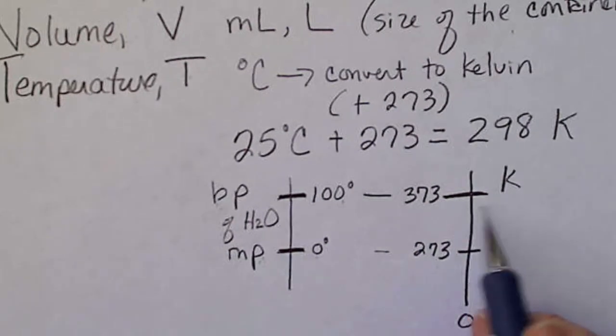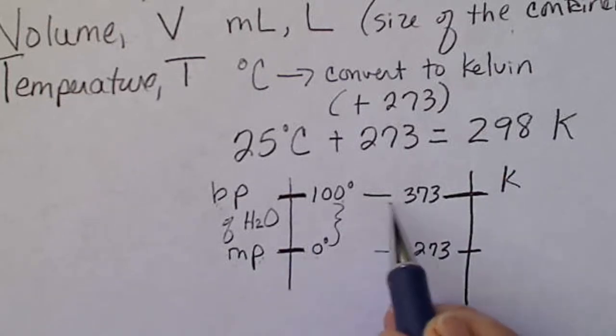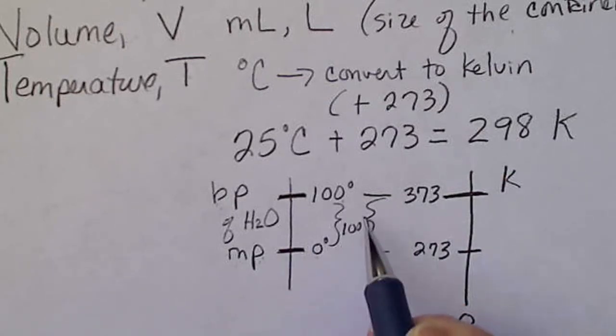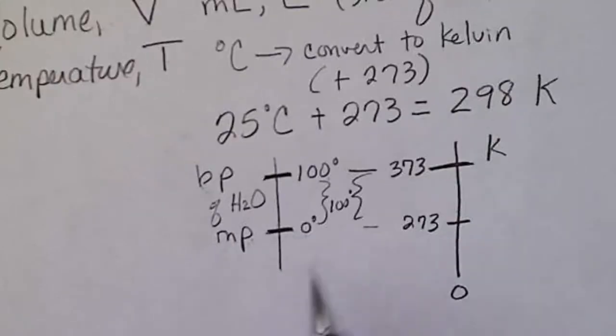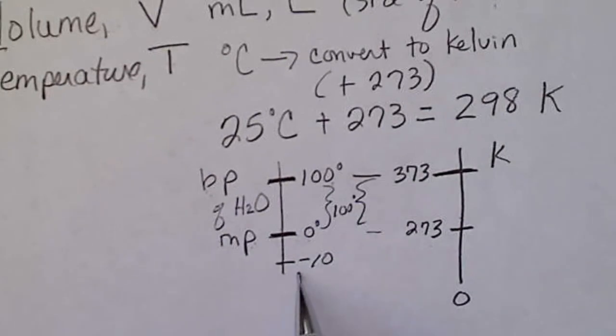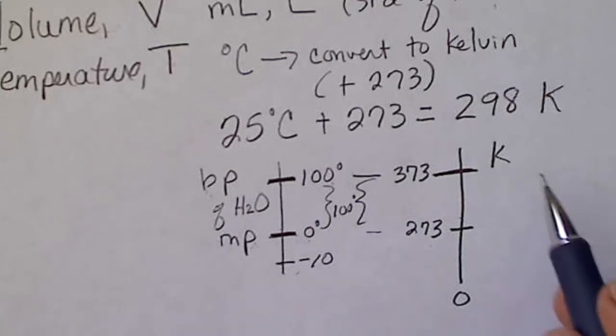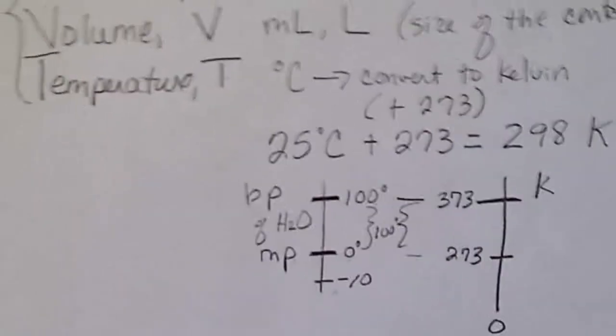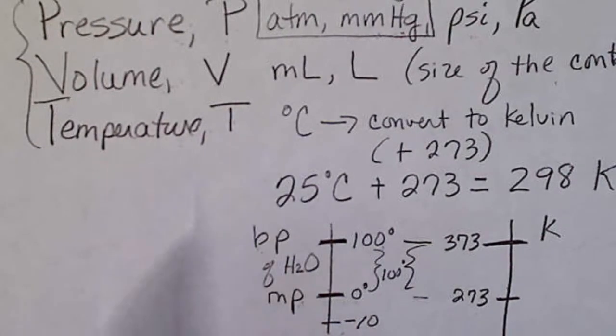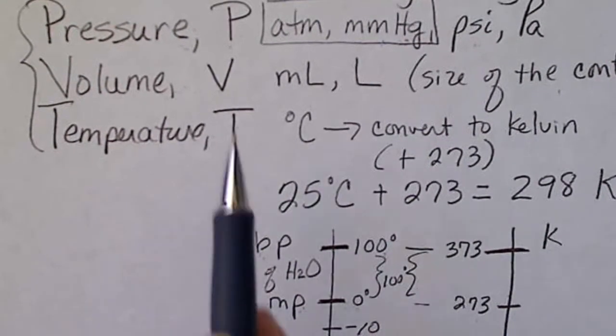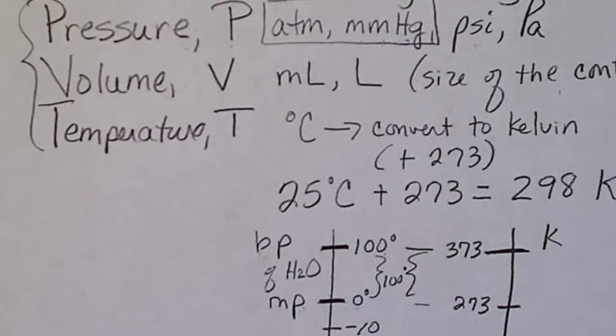So a Celsius degree, there's 100 degrees difference between both scales. But the size of one degree Kelvin is the same size as one degree Celsius. But it is possible to have negative temperatures on the Celsius scale. That's not so with a Kelvin scale. So any time we are going to put the temperature in a mathematical formula, the temperature has to be in Kelvin.